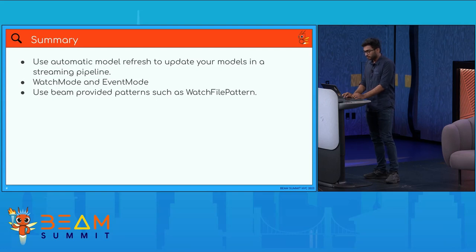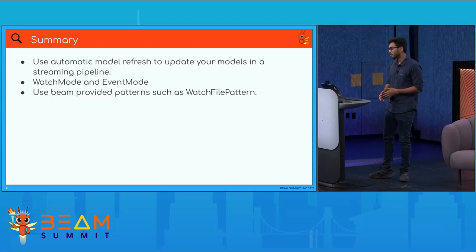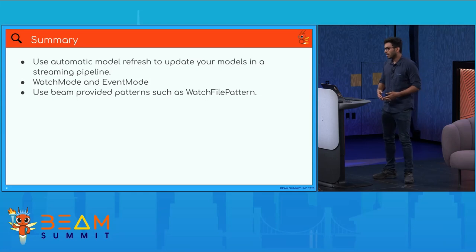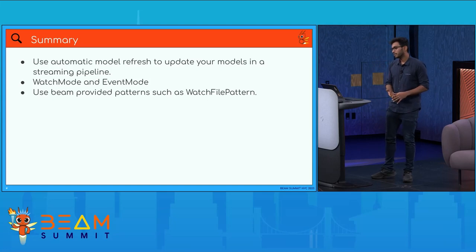In summary, use automatic model refresh to update ML models in run inference within streaming pipelines without manual intervention or stopping the pipeline. There are two modes: watch mode for watching a directory for model updates, and event mode for using an event such as reading from PubSub. Beam provides the watch file pattern PTransform to watch any accessible directory — GCS, AWS, any bucket — to get the latest model matching the file pattern.